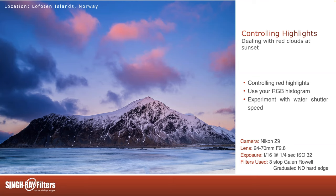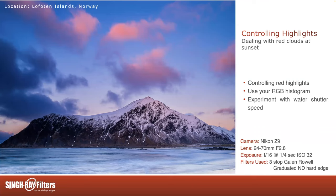A question I get all the time on workshops: you're photographing a landscape with that bright red sky and flaming pinks up top, but deeper shadows in the foreground. If you look at your histogram, the reds create huge clipping — it goes right off the right side, so it's overexposed. The challenge is I want to hold onto those reds, but if I reduce exposure in camera, my foreground goes almost pitch black. The way I get around that is graduated ND filters — the Galen Rowell variety.